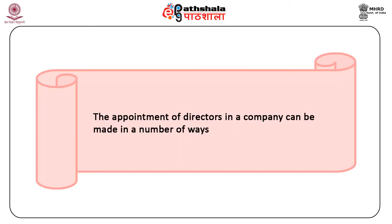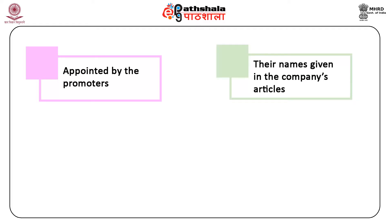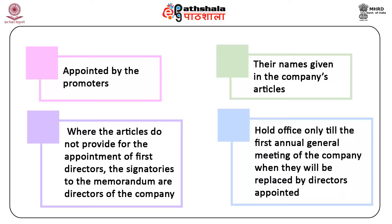The appointment of directors in a company can be made in a number of ways. Appointment of directors by promoters or first directors: the first directors of the company are usually appointed by the promoters in the manner laid down by the company's articles. Their names are usually given in the company's articles. Where the articles do not provide for the appointment of first directors, the signatories to the memorandum who are individuals shall be deemed to be the first directors, subject to the regulations of the company's articles. The first directors can hold office only till the first annual general meeting of the company, when they will be replaced by directors appointed by the company at that meeting.